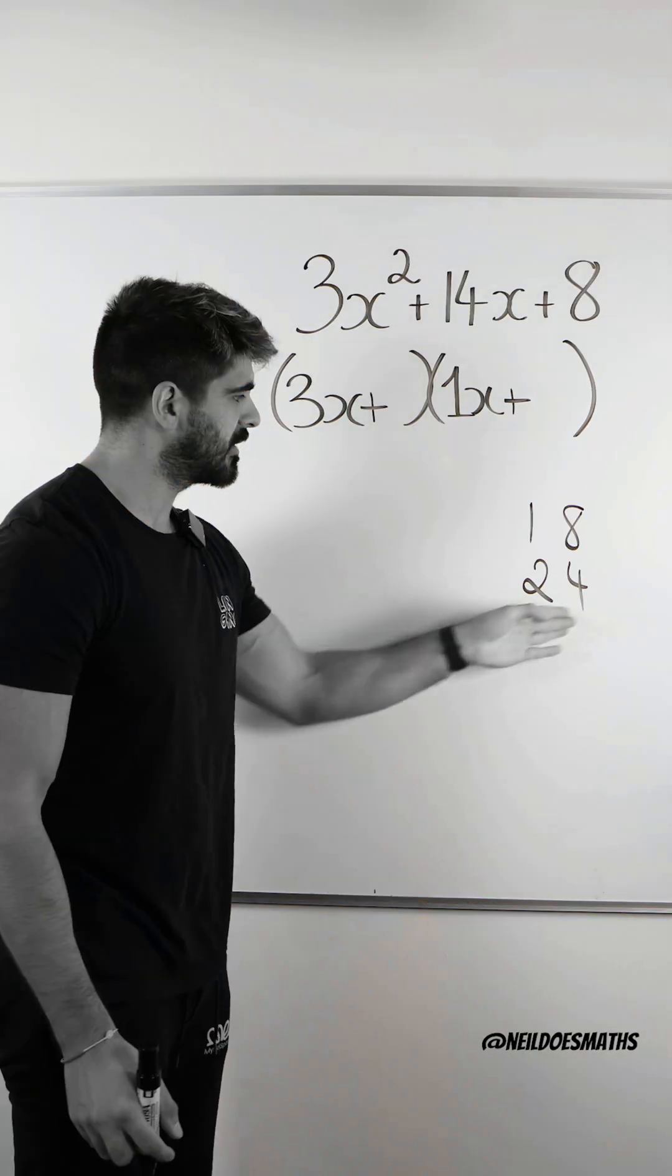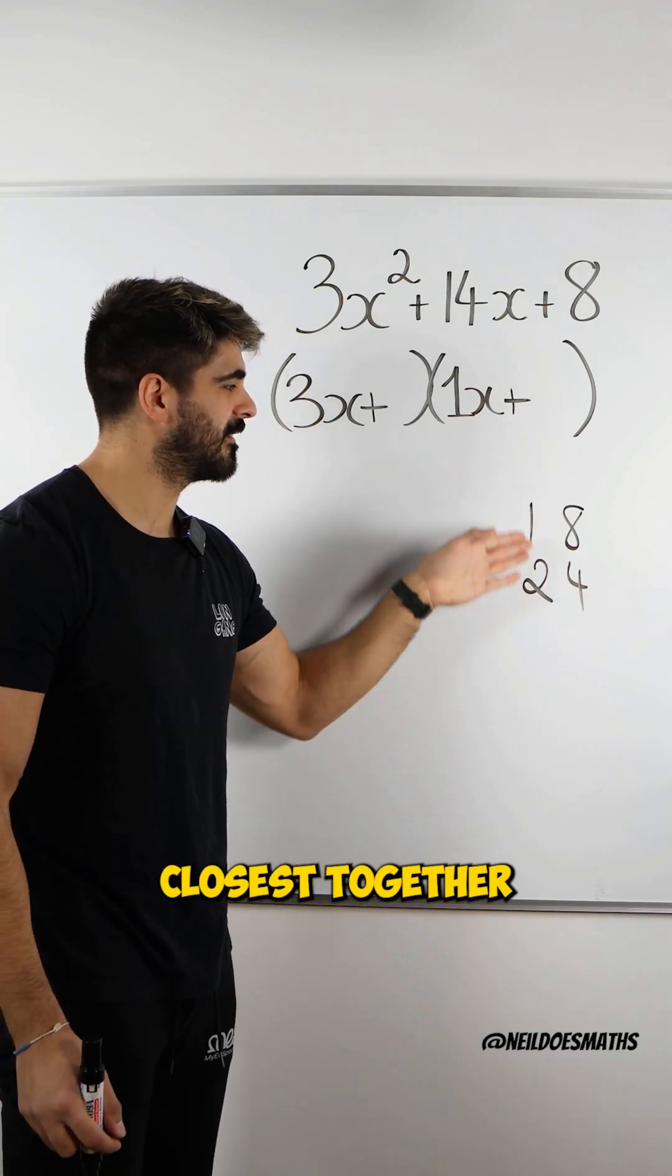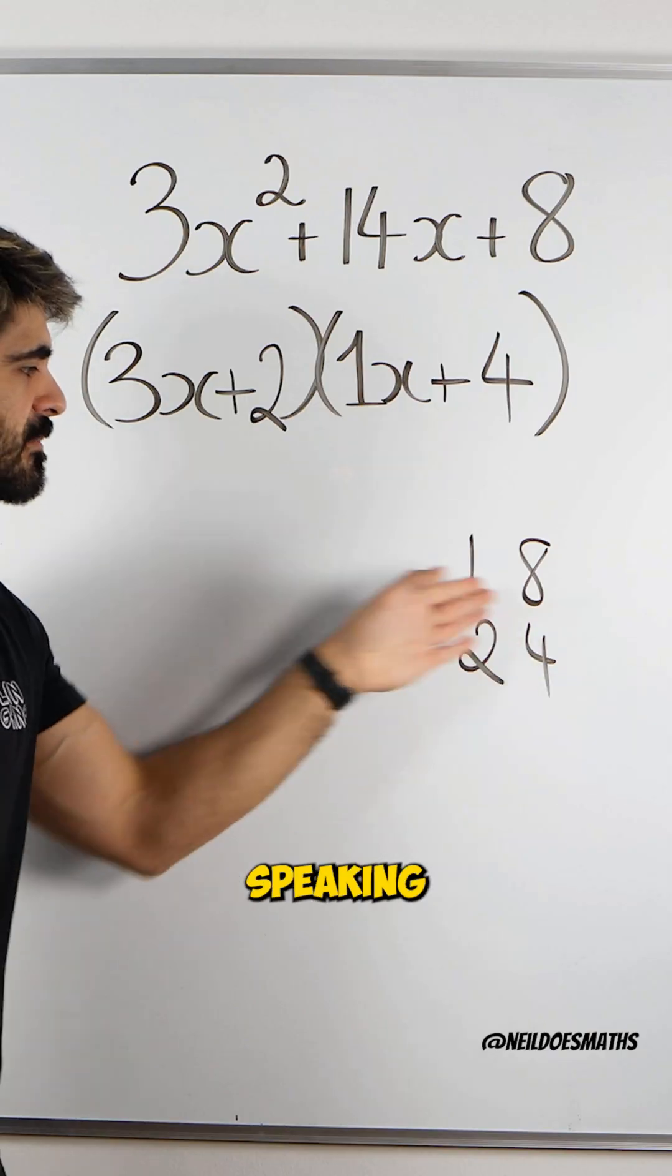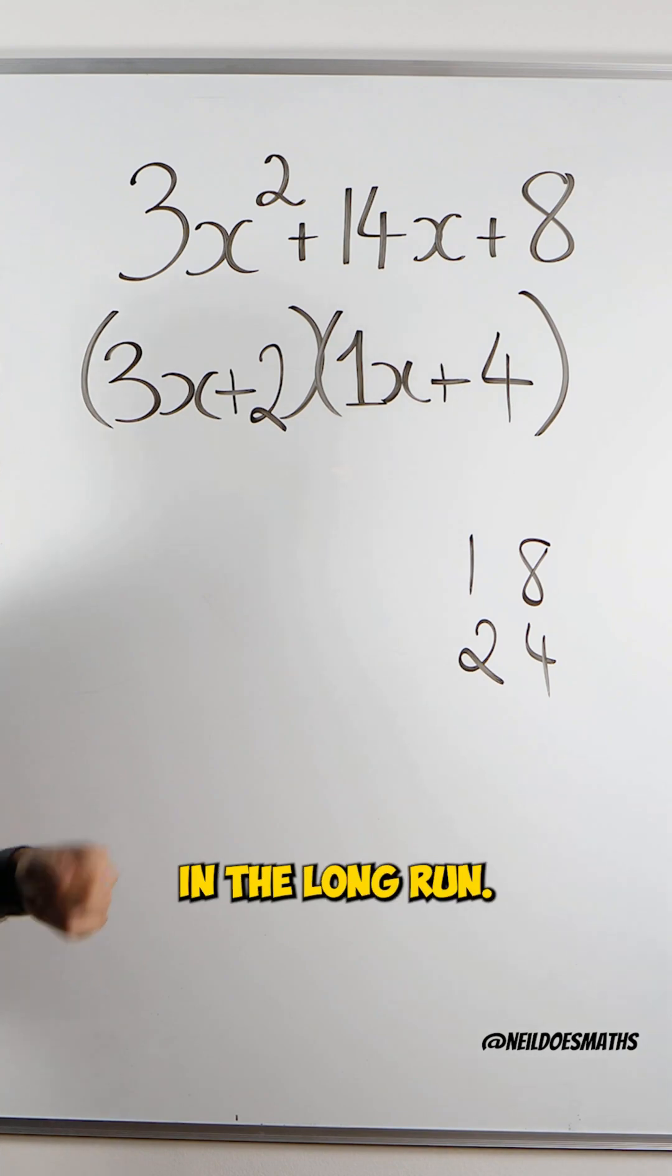When you experiment, pick the numbers which are closest together first. 2 and 4. You can try 1 and 8 first, but generally speaking, pick the numbers closest together in the long run.